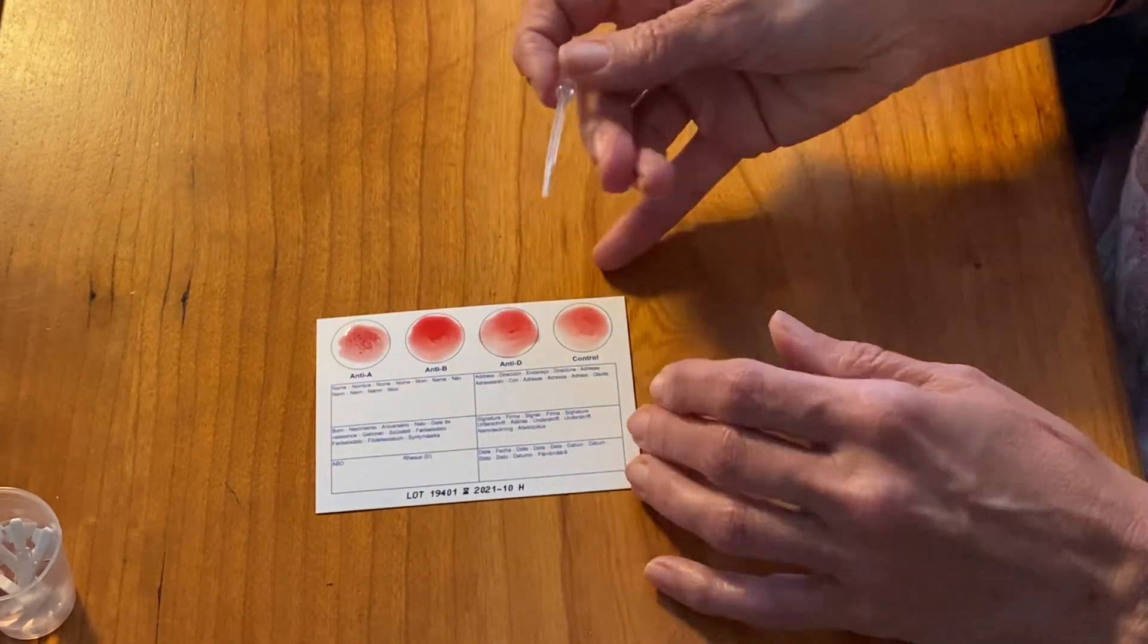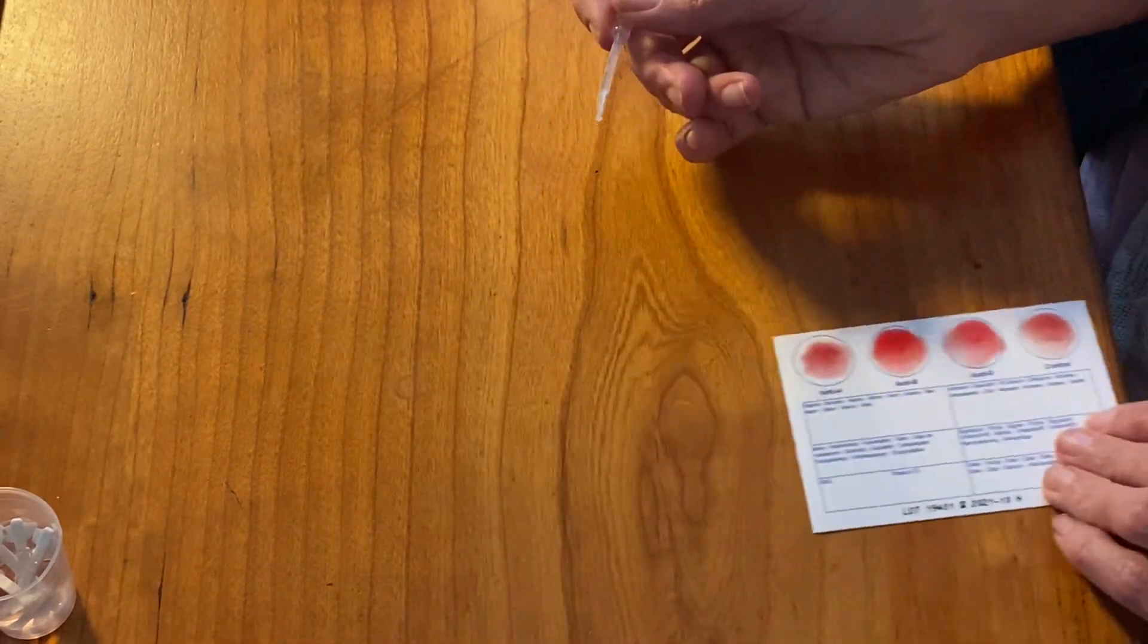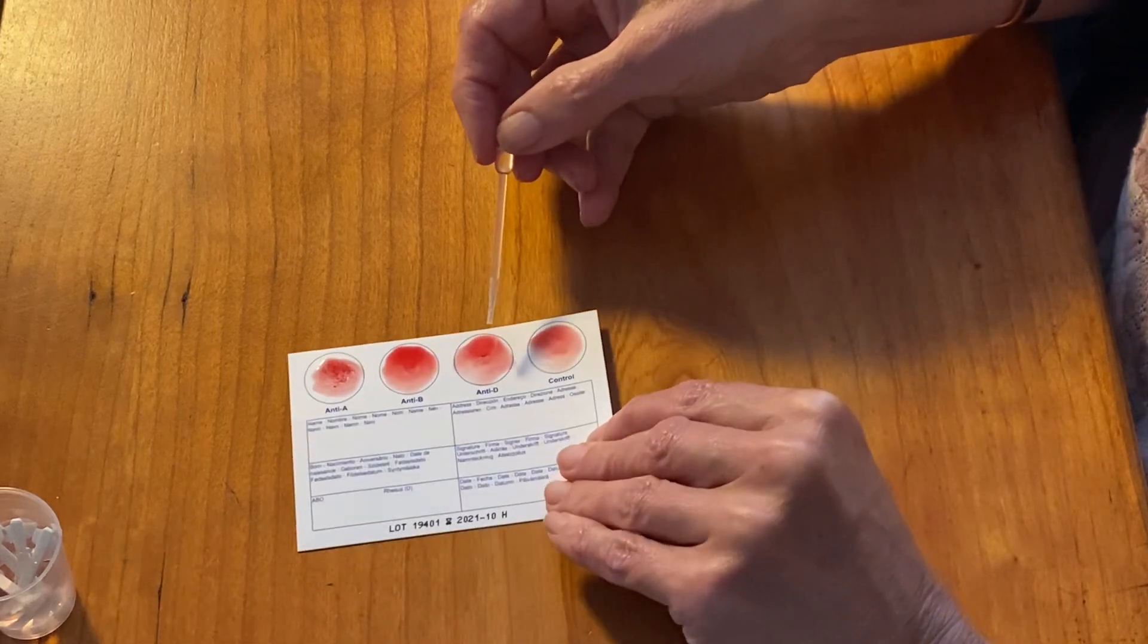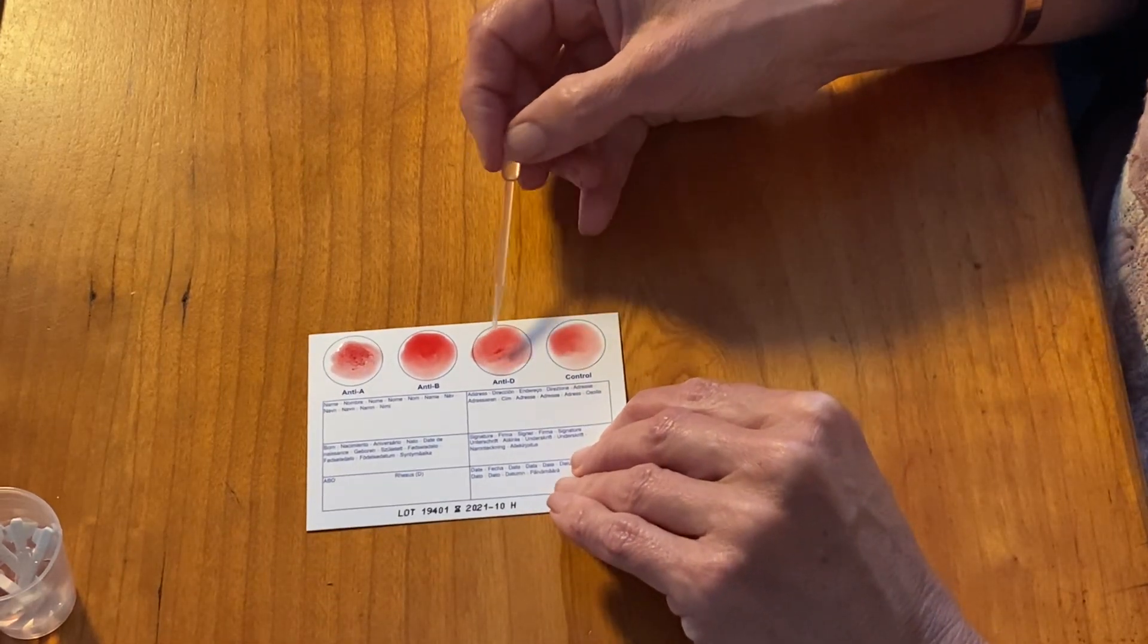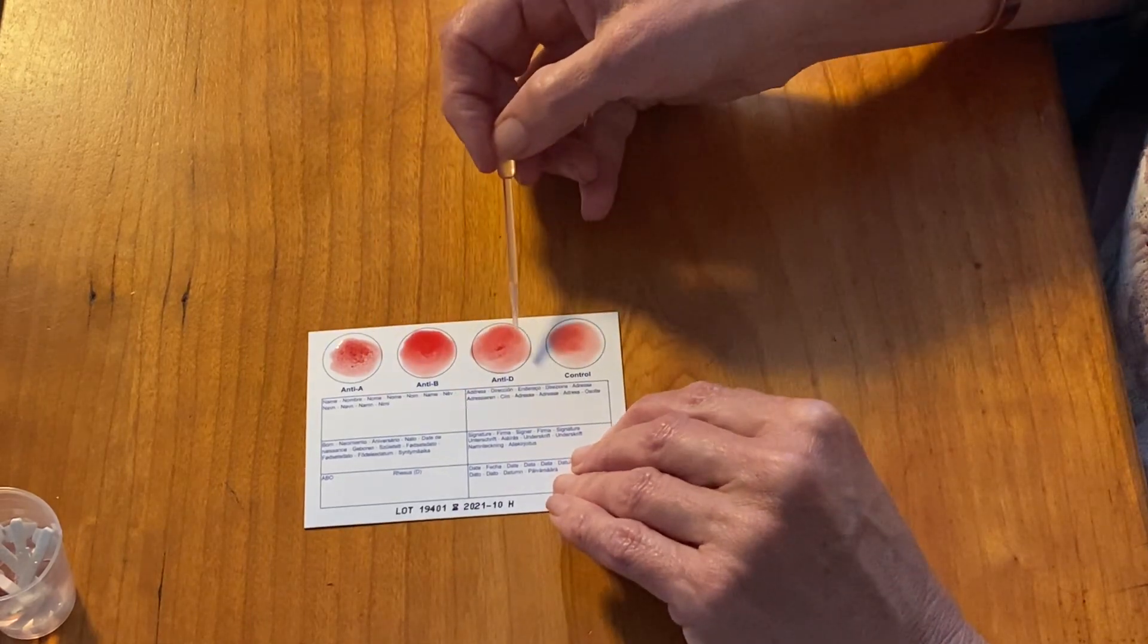As you can see, the coagulation is very strong there. The coagulation for the rhesus isn't as strong but it's definitely there. I can see that coagulation there. So that means I'm A positive.